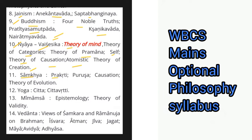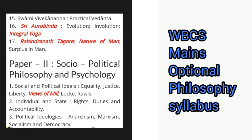Then Samkhya — Prakriti, Purusha, causation, theory of evolution. Then the concept of yoga, chitta, chitta vritti. Then Mimansa — epistemology and theory of validity. Next, Vedanta — views of Shankara and Ramanuja on Brahman, then Ishvara, Atma, Jeeva, Jagat, Maya, Avidya, Adhyasa. Next, the concept of Swami Vivekananda and practical Vedanta. Then Sri Aurobindo — evolution, involution, integral yoga. Then Rabindranath Tagore — nature of man and surplus in man.